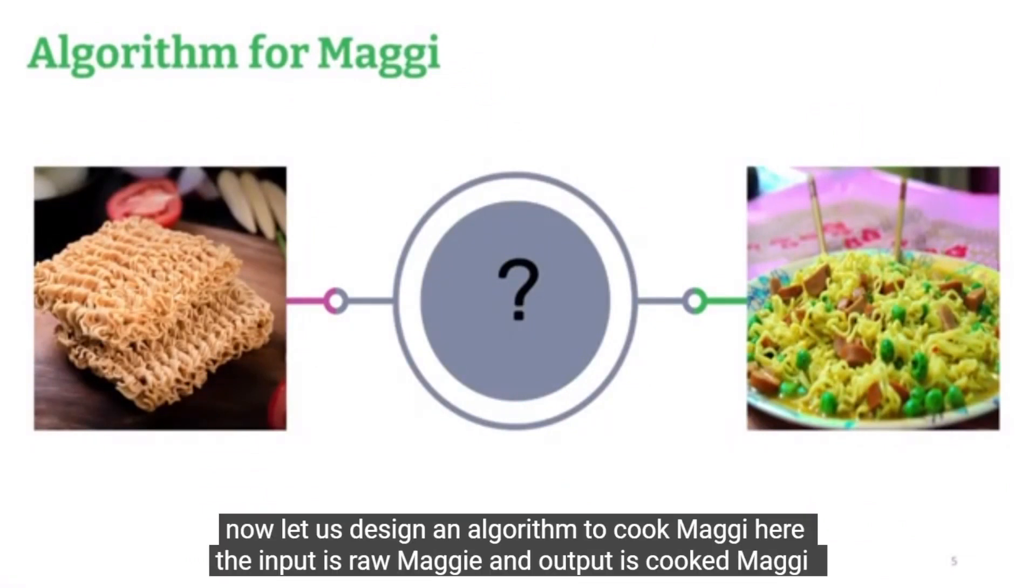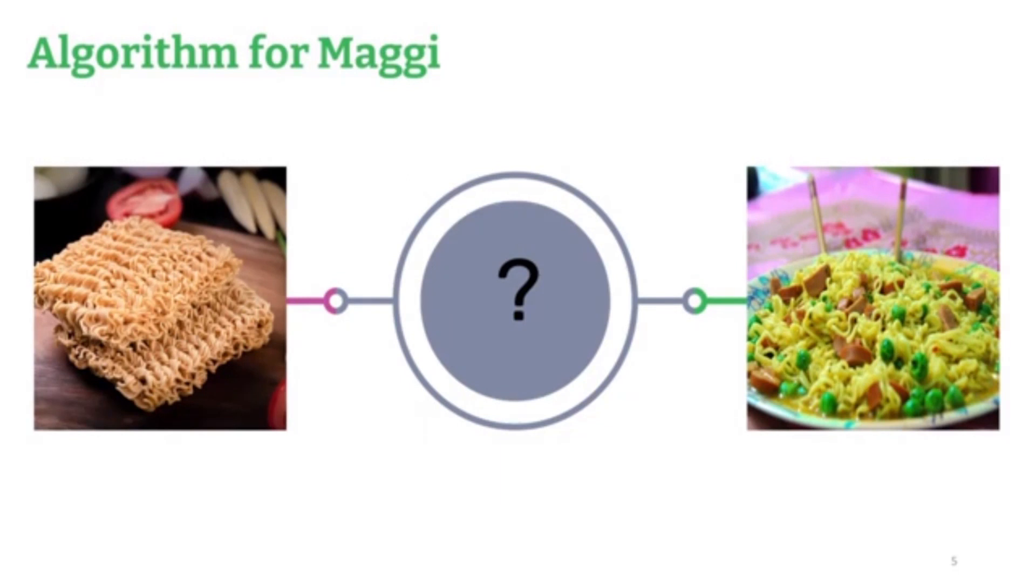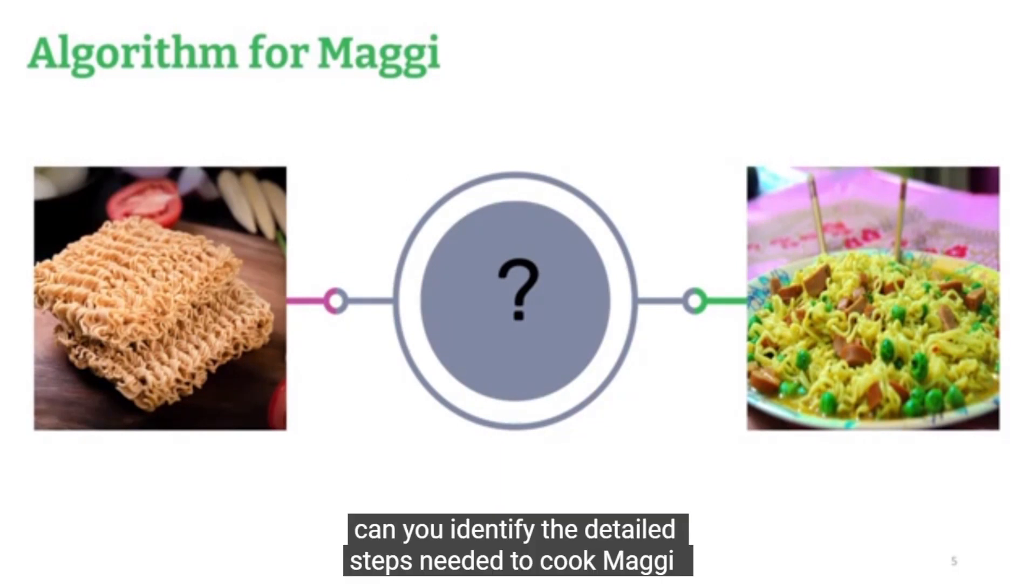Now let us design an algorithm to cook Maggi. Here, the input is raw Maggi and output is cooked Maggi. Can you identify the detailed steps needed to cook Maggi?